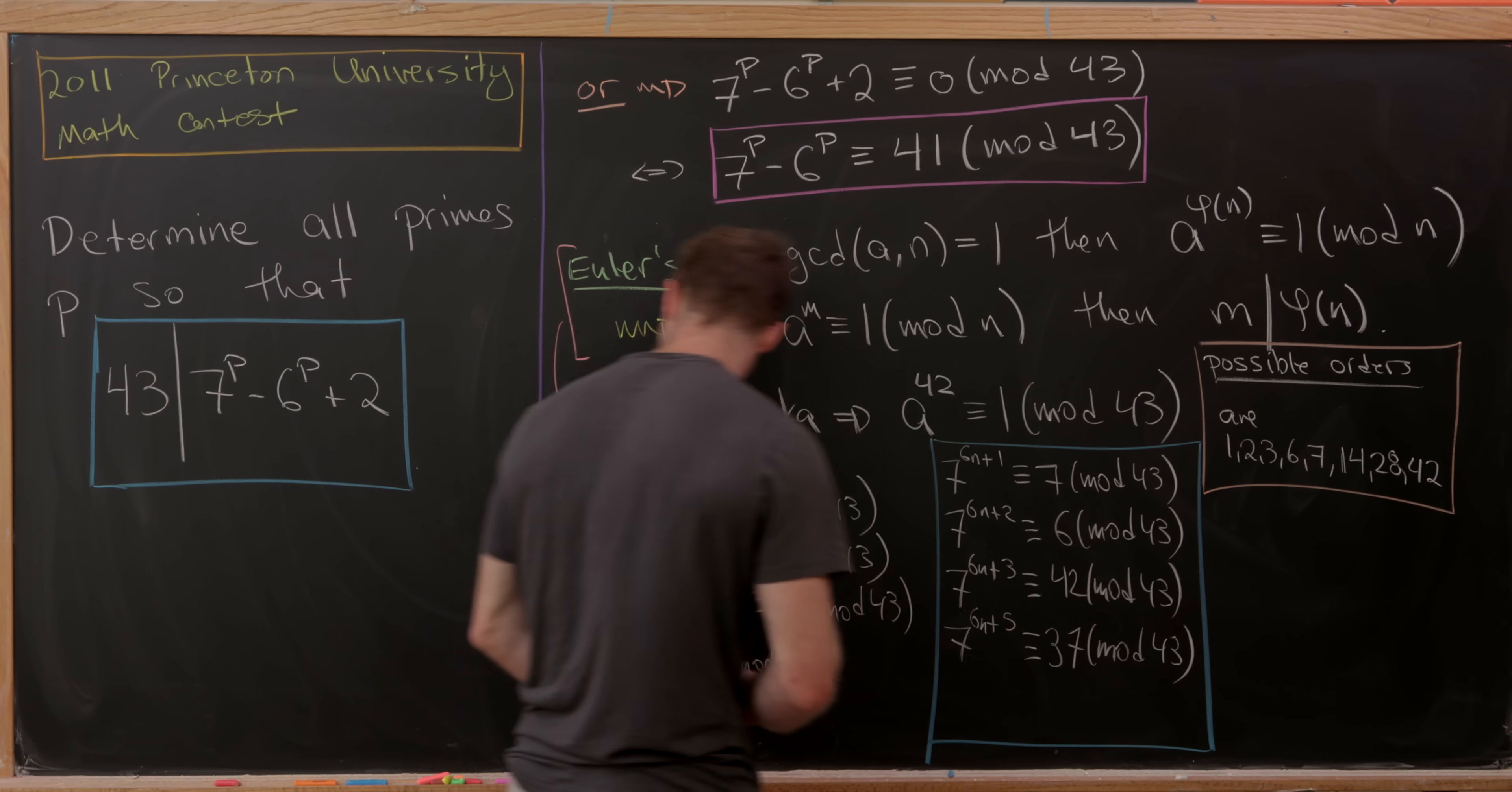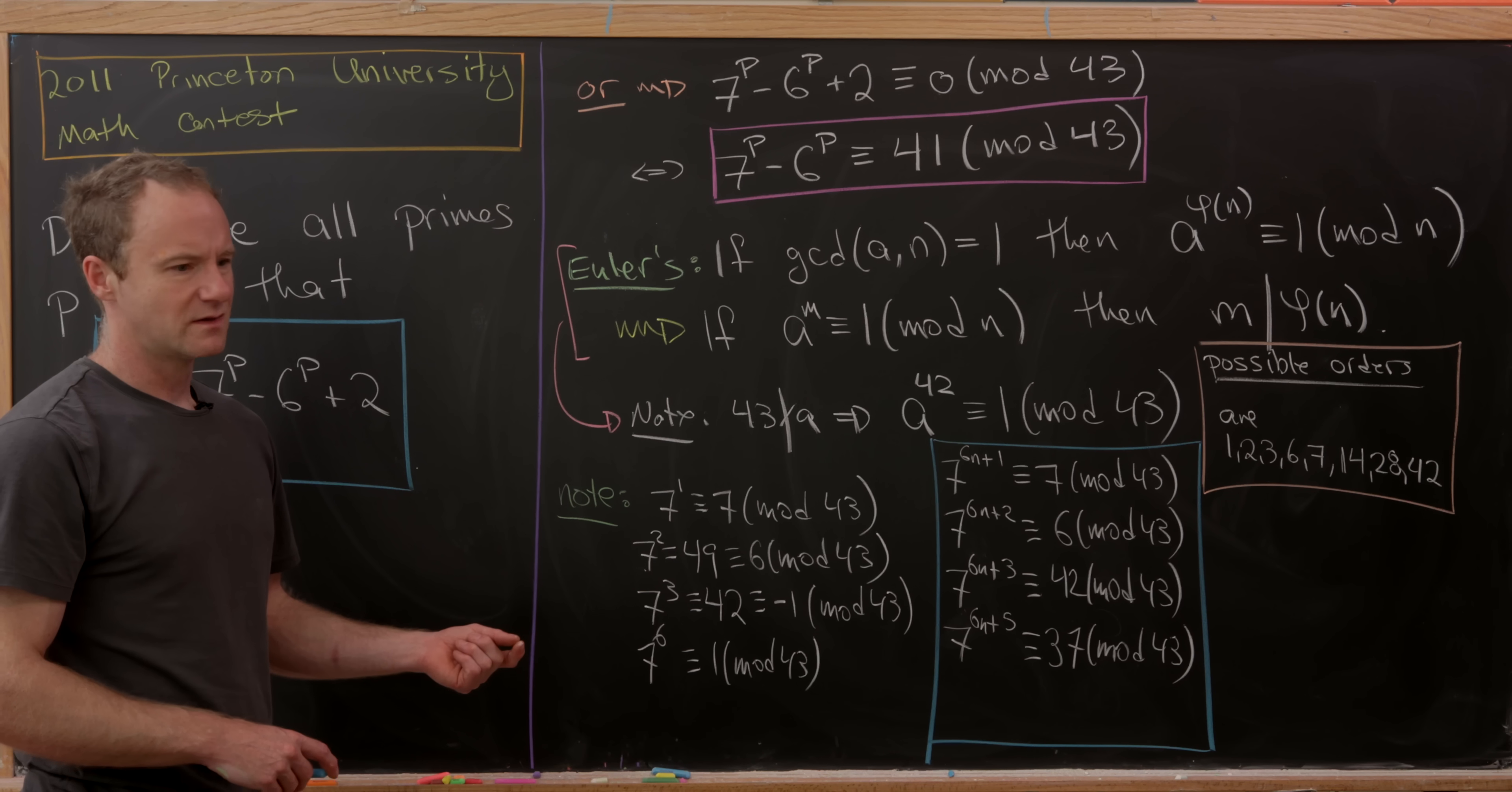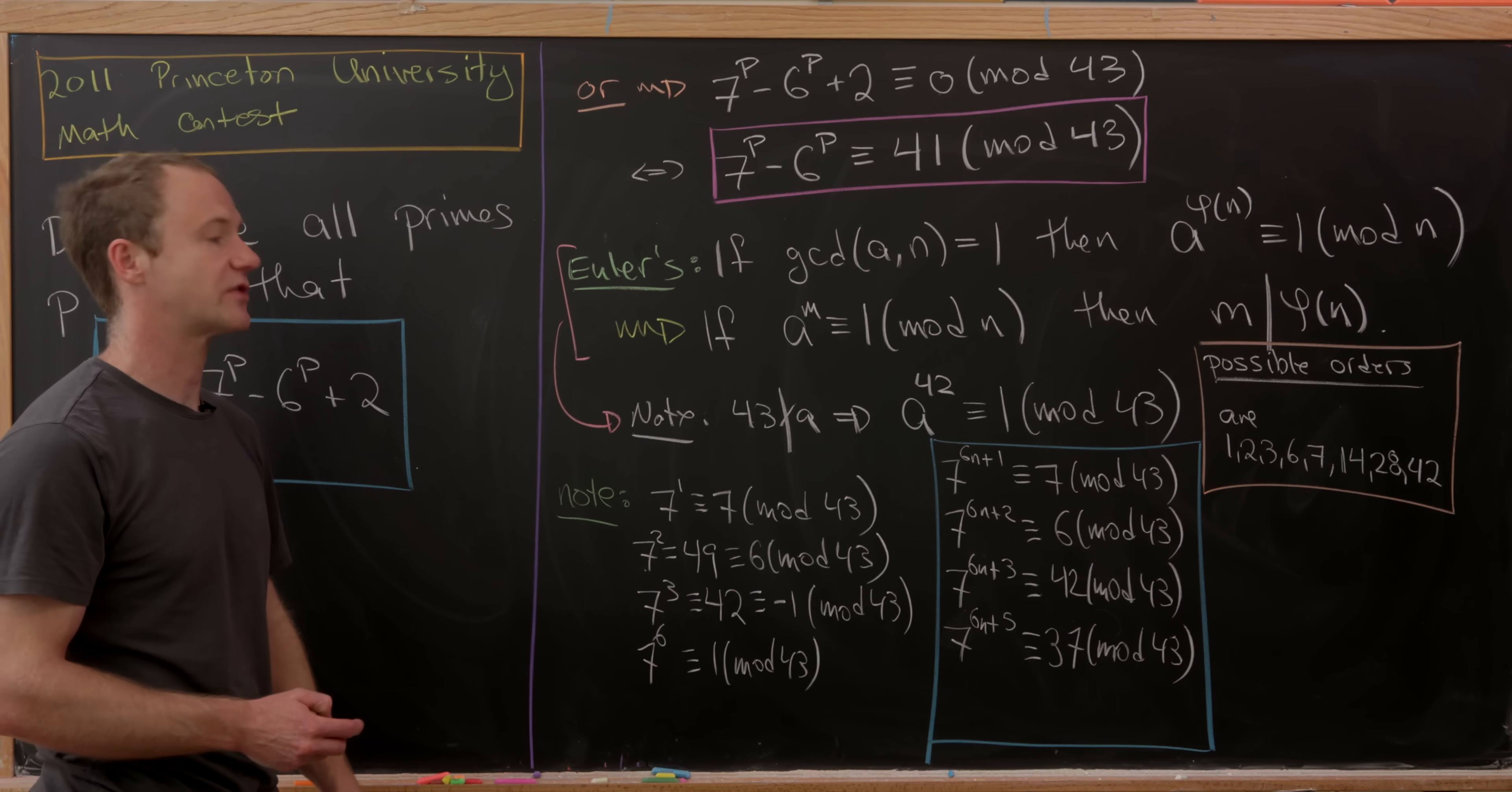You might say, don't we need the others? We're missing 6n+4 and plain old 6n. But notice that 6n+4 is never prime, it's always divisible by 2 and never equal to 2. And 6n is also never prime, it's always divisible by 2 and 3.